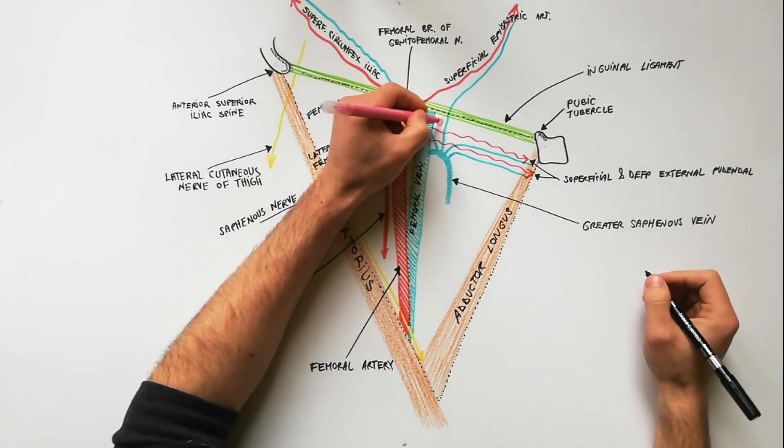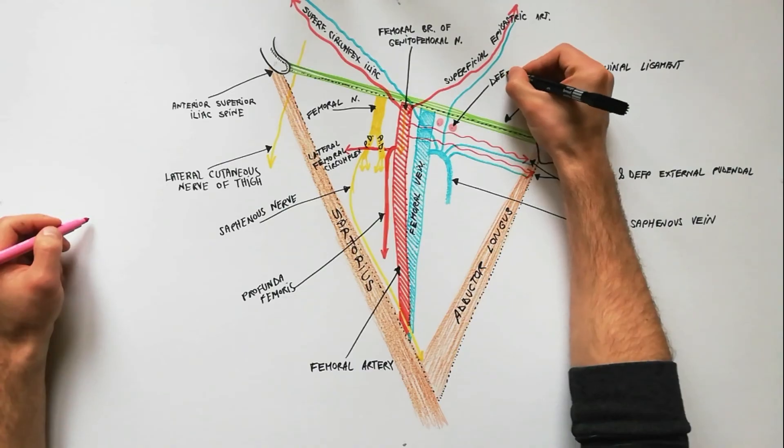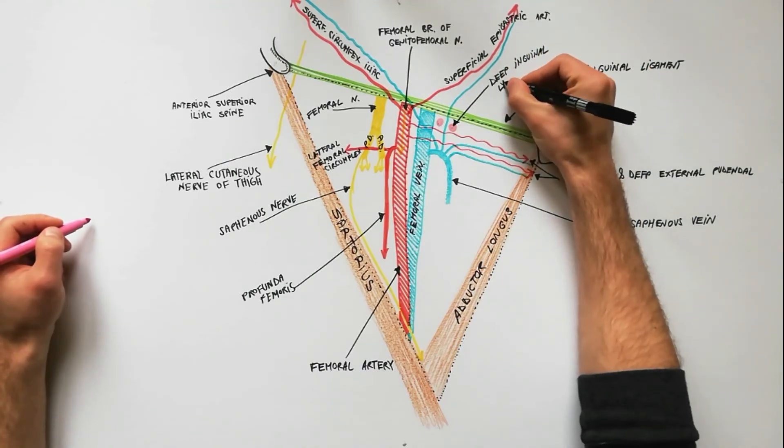Finally, deep inguinal lymph nodes lie medial to the upper part of the femoral vein.